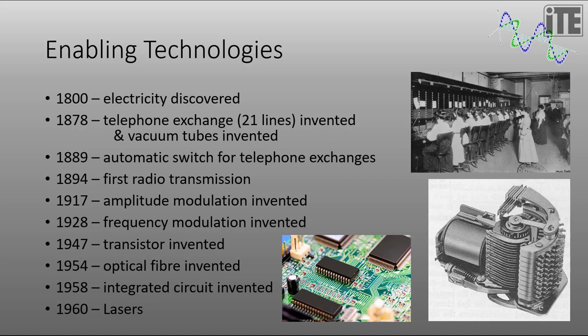1894 was the first radio transmission. 1917 amplitude modulation was invented. 1928 frequency modulation. 1947 modern semiconductor electronics were invented — the transistor. 1954 optic fibres. 1958 integrated circuits, which you can see here in this photograph. And 1960 lasers. These were all very important enabling technologies that have led to the broad-scale deployment of telecommunication systems in modern society today. We'll be talking more in other videos about amplitude modulation, frequency modulation, optic fibres, and so on.